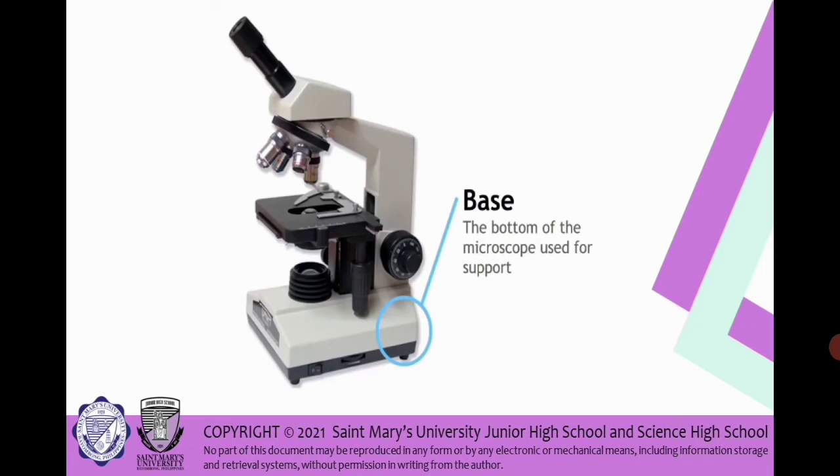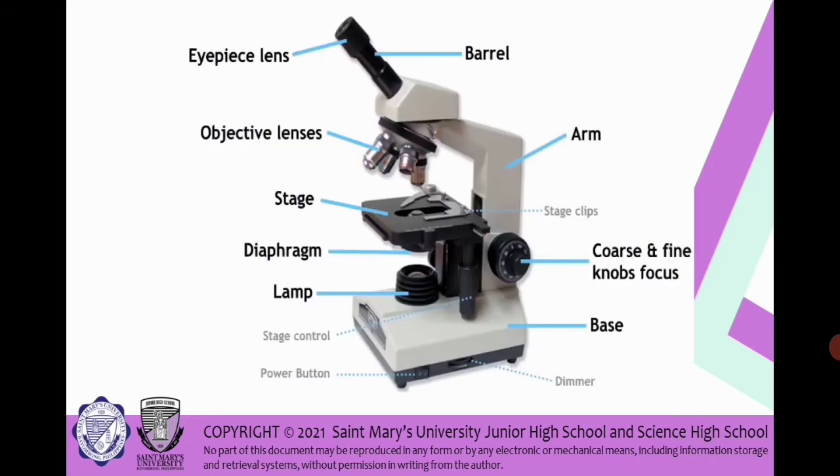Next is we have the aperture. That is the hole in the middle of the stage. And we have also the base, the bottom of the microscope used for support. It supports the full parts of the microscope. That is the summarized parts of the microscope.